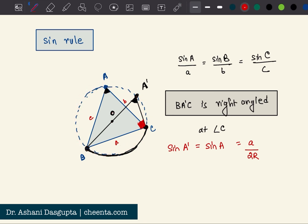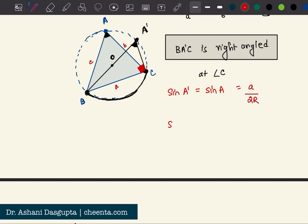So what we get is sine of A divided by small a is 1 by 2R, which is an invariant for this circle.